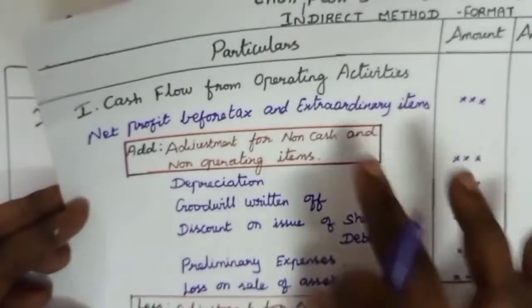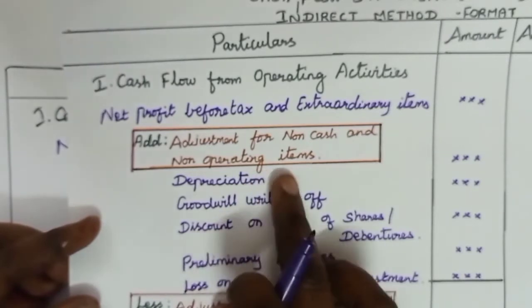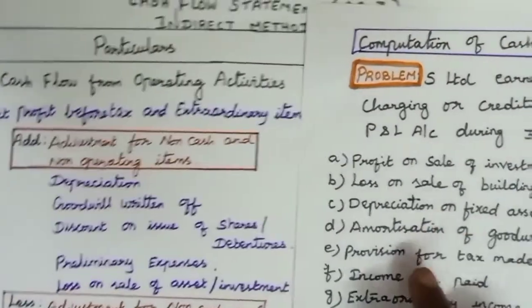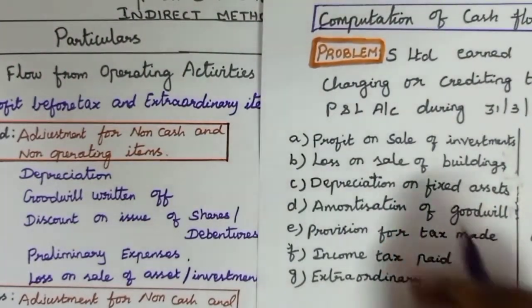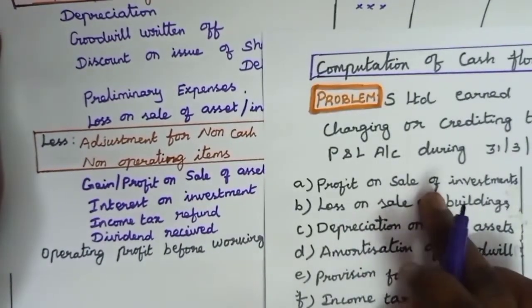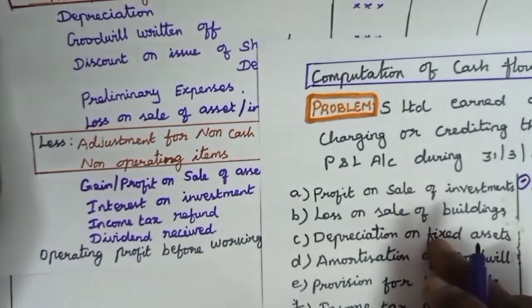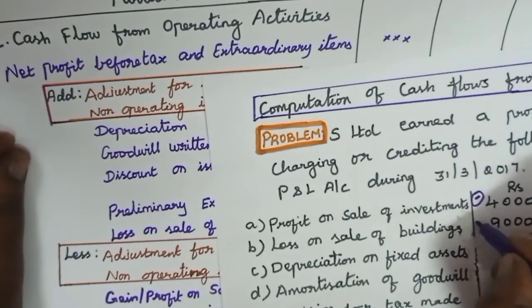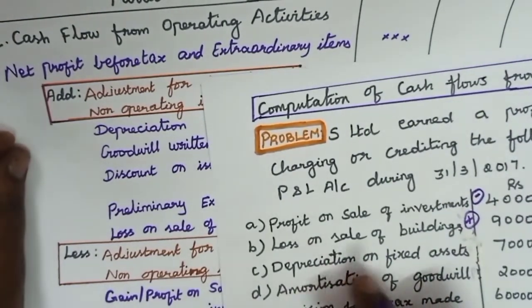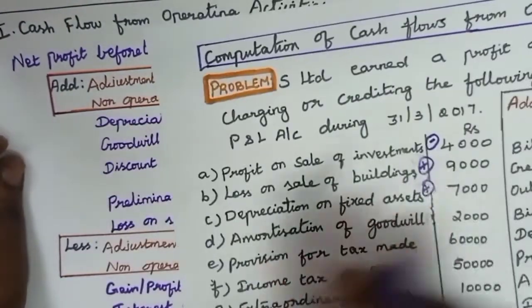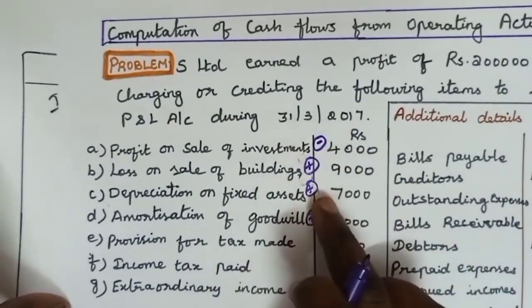The next step is to adjust items of non-cash and non-operating items. Look at the problem and identify what are the non-cash items and non-operating items. First, profit on sale of investment — any profit on sale of fixed asset and investment we have to subtract from the net profit. Loss on sale of buildings — any loss we have to add with the net profit. Depreciation is a non-cash item, we have to add. Next item, goodwill amortization — we have to add that as well.